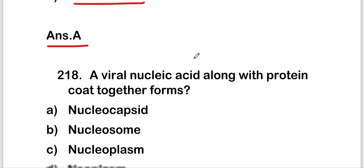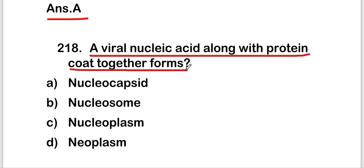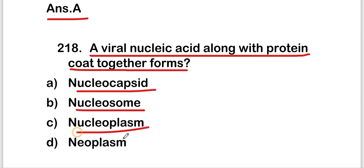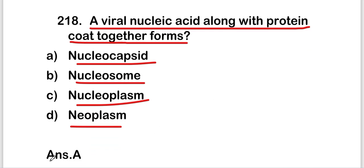The next question is: viral nucleic acid along with protein coat together form — nucleocapsid, nucleosome, nucleoplasm, or neoplasm. The right answer is option A, that is nucleocapsid. Viral nucleic acid plus protein coat together are known as nucleocapsid.